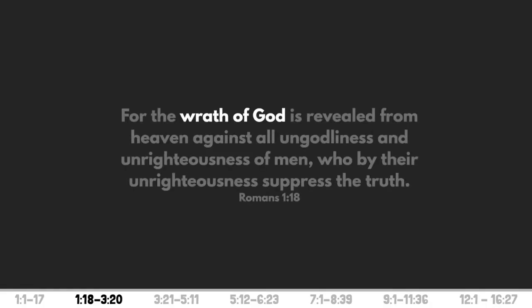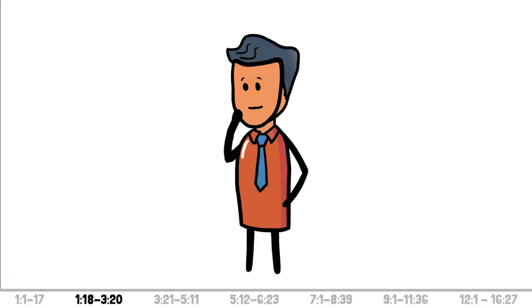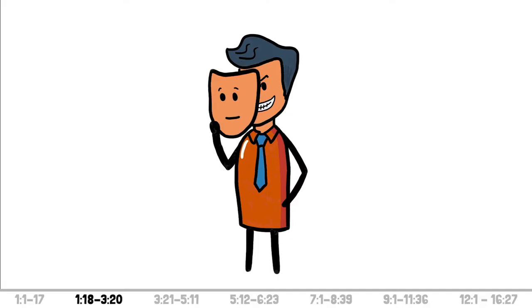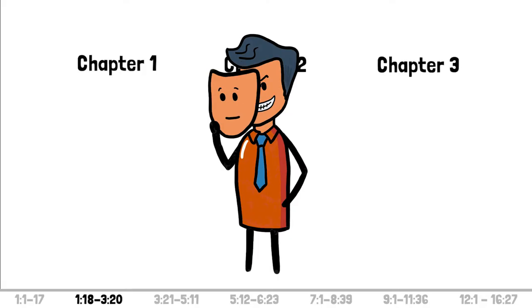Romans 1:18 says, For the wrath of God is revealed from heaven against all ungodliness and unrighteousness of man, who by their unrighteousness suppress the truth. So, God is angry because man suppressed the truth. What does suppressed mean? Suppressed means that you hold the truth, but you don't live according to it. That's what chapter 1 to 3 are about.